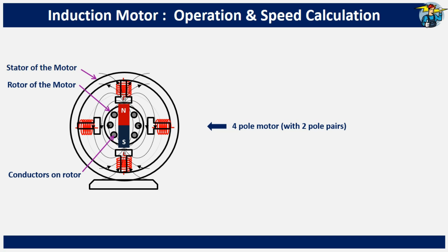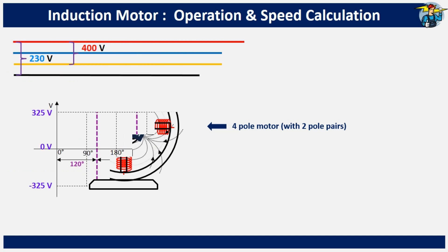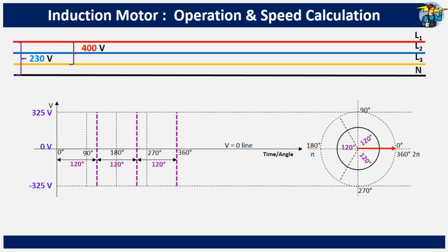Initially, we need to create a rotating magnetic field to rotate the rotor of the motor. Three-phase motors automatically produce this rotating magnetic field, as their line voltage pulsates with a 120-degree angle difference.